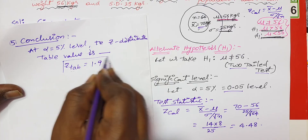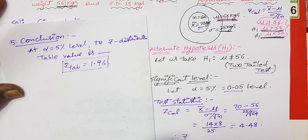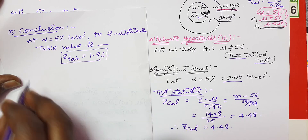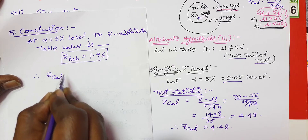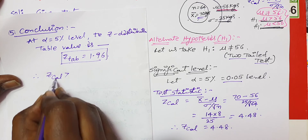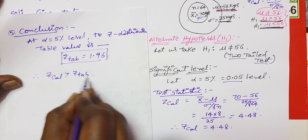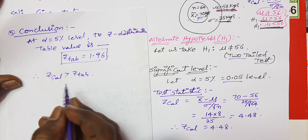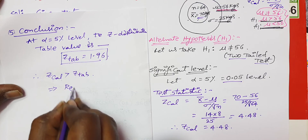Comparing: the calculated value is 4.48 and the table value is 1.96. TAB means table value and CAL means calculated value. Since calculated value 4.48 is greater than table value 1.96, we reject H0.